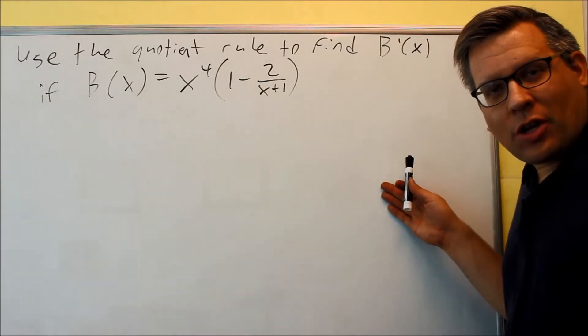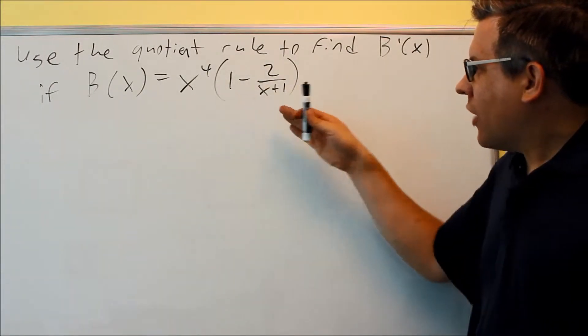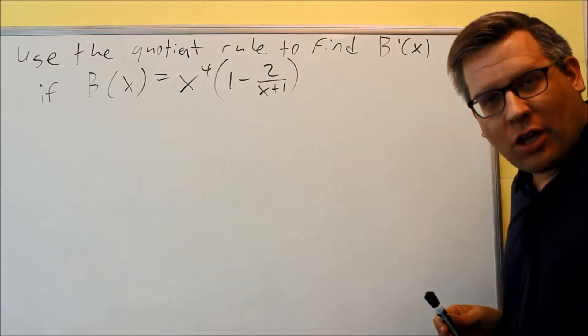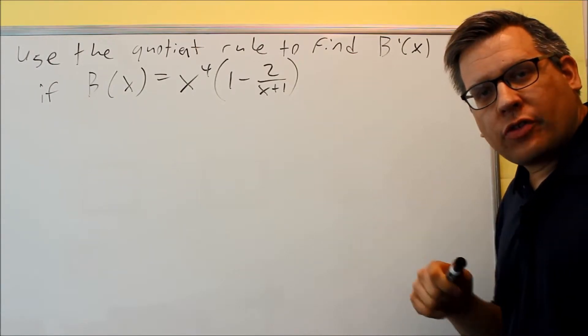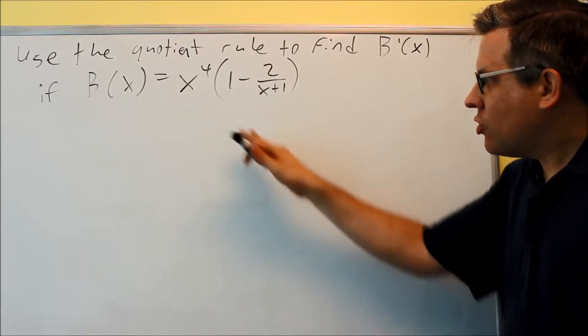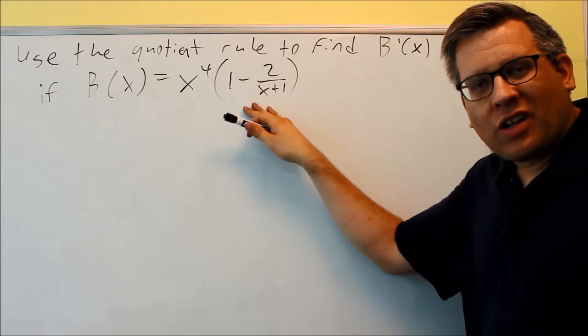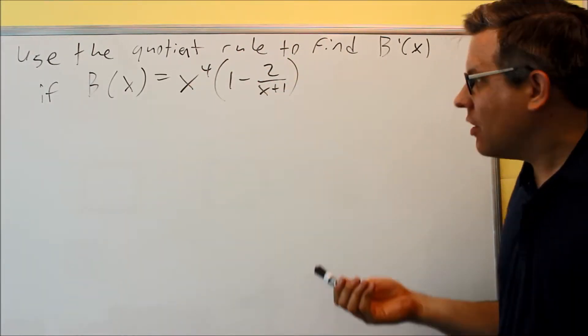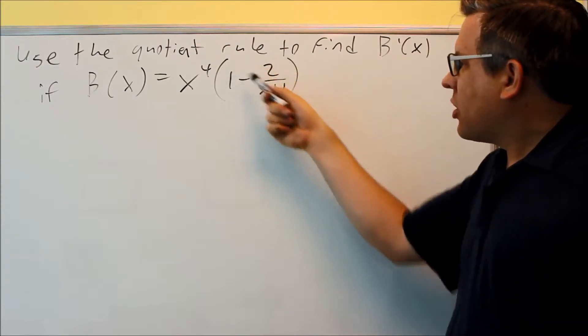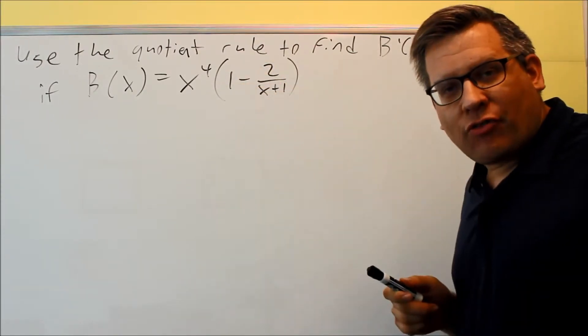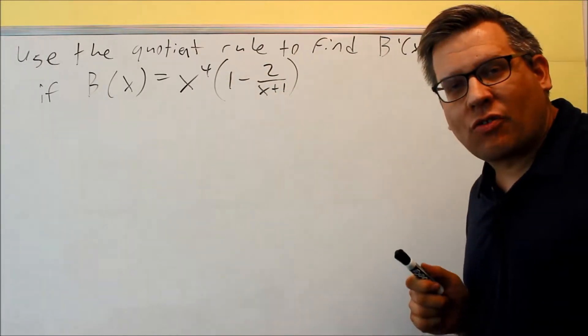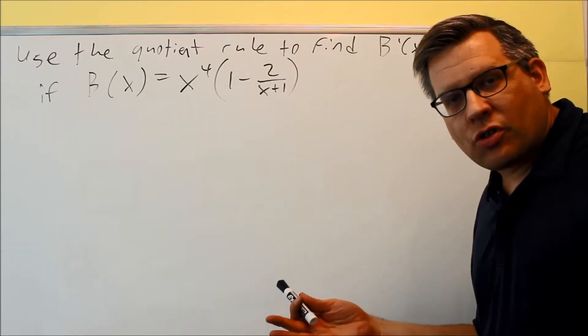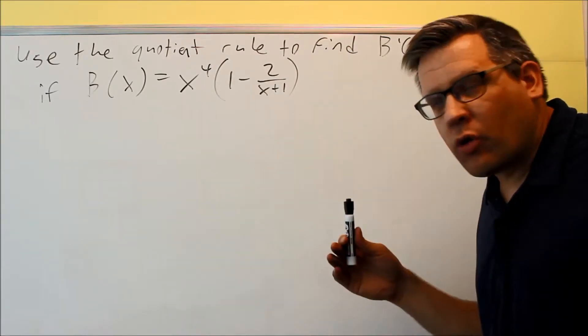Okay, this problem is a little bit more complicated, because we have a quotient and a product together. So, one way of doing this would be to do the product rule, and then inside the product rule do a quotient rule. But instead, what I'm going to do is I'm going to get common denominators inside here first, and then I'll multiply by x to the fourth. Then the whole problem will just turn into a quotient rule instead, so we don't have to use both.